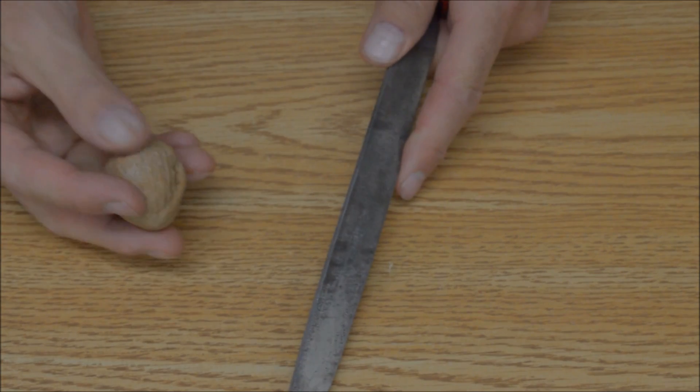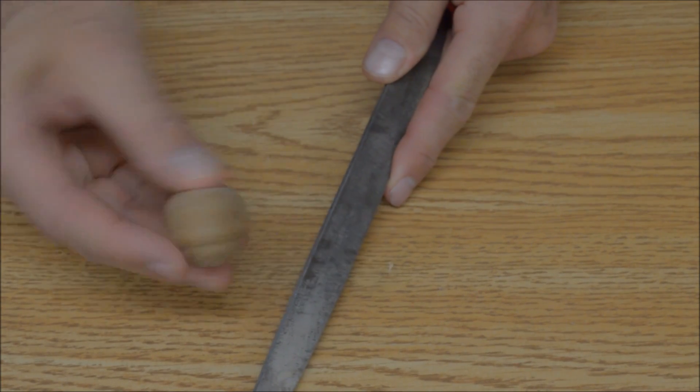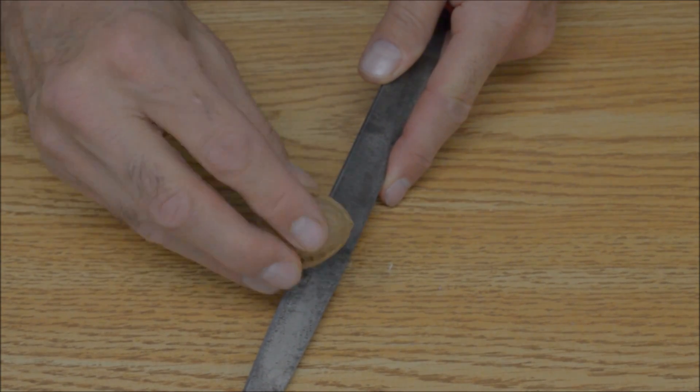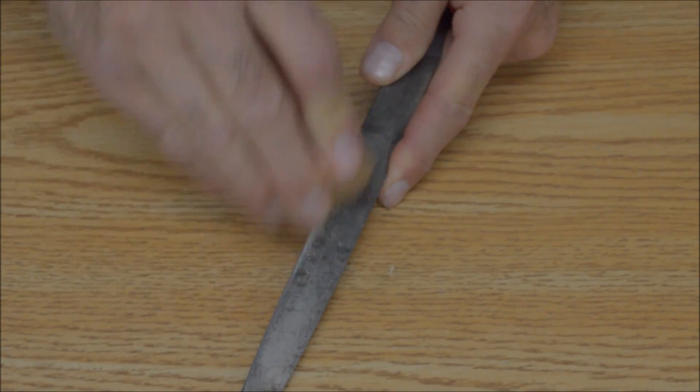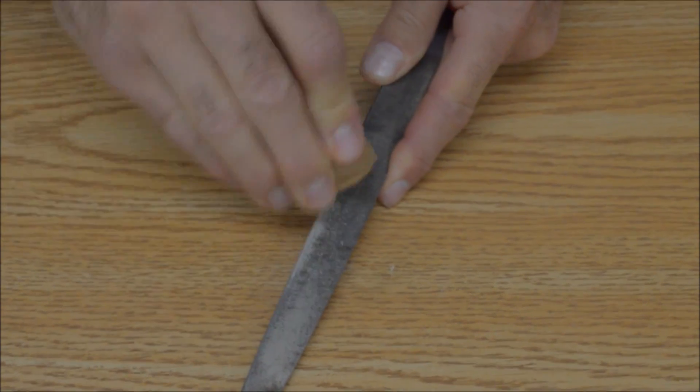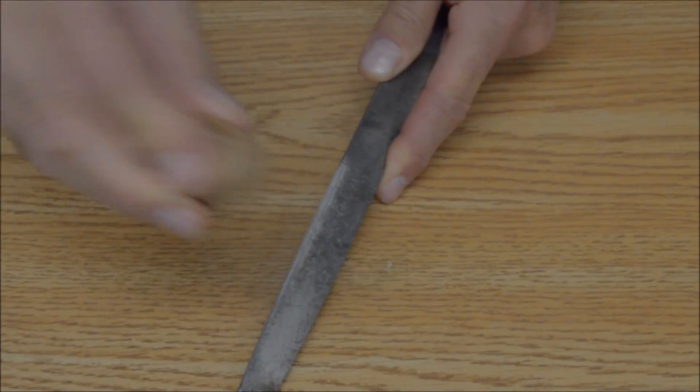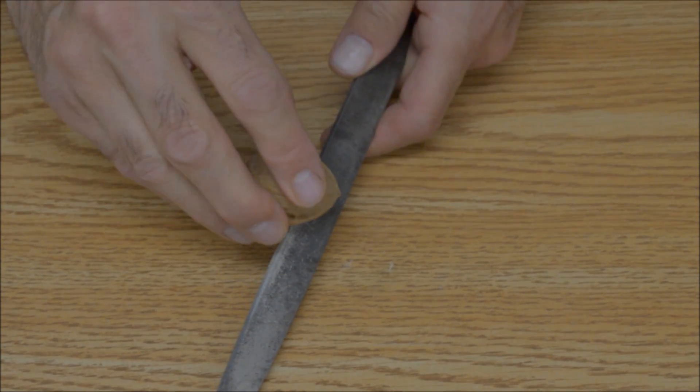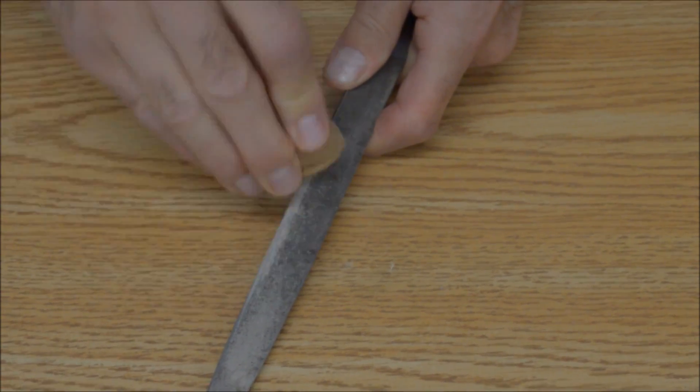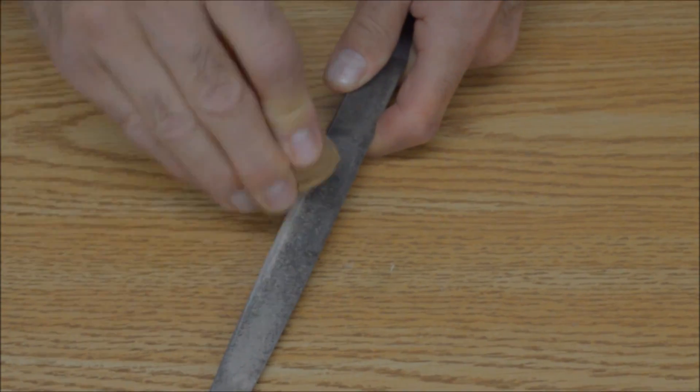This way, round seed is less likely to go shooting across the room. You want the groove to be deep enough so that you can see the white inner seed, but you don't want to damage the inner part. This walnut is really hard and needs some more filing, but I'll do that later. You get the idea.